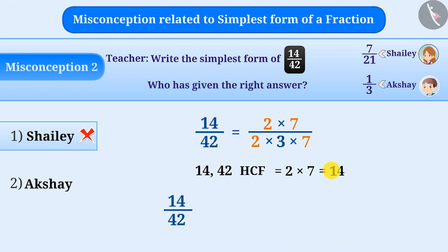Then, we will divide the numerator and the denominator by the HCF. By doing so, we get the simplest form of 14/42 as 1/3. That means, Akshay has given the correct answer.